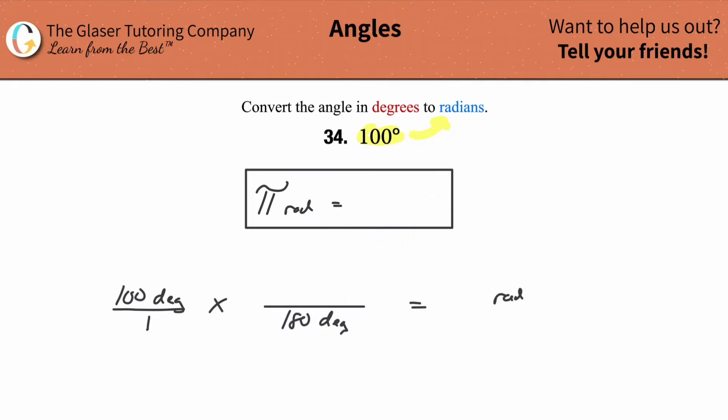Why do I do that? Why degrees in the denominator? Because I want them to cancel. I don't want that in my answer. So if I plug in the degrees in the denominator, then the radians must go in the numerator.